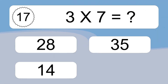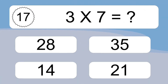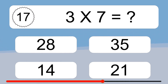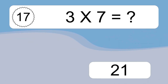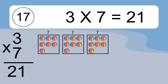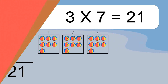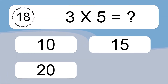3 times 7 equals what? We have 3 boxes and each box has 7 colorful balls inside. If you count all the balls in all the boxes together, you will have 3 times 7 balls. This equals 21 balls.